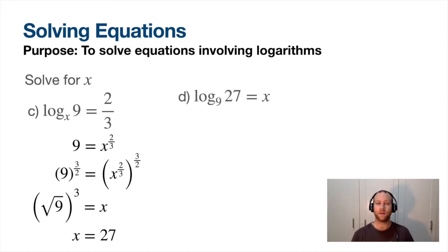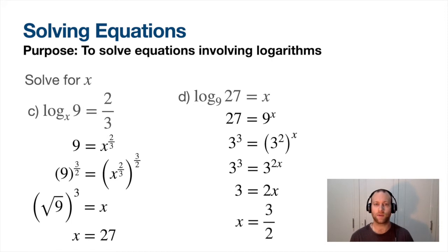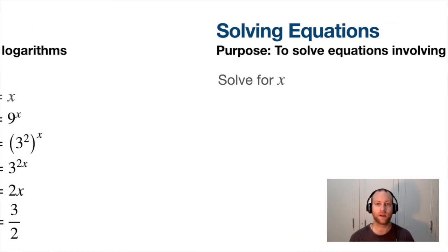Another one: log base 9 of 27 equals x. Again, you could just plug that into your calculator, but I'm going to show you the process of how you'd get this. I can turn these into the same base, so both of those are 3 to the power of something. Again, on the right, a power to a power, so I can multiply the powers. Since the base is the same, the powers have to be the same, so I get 3 equals 2x, and then x is just 3 over 2.